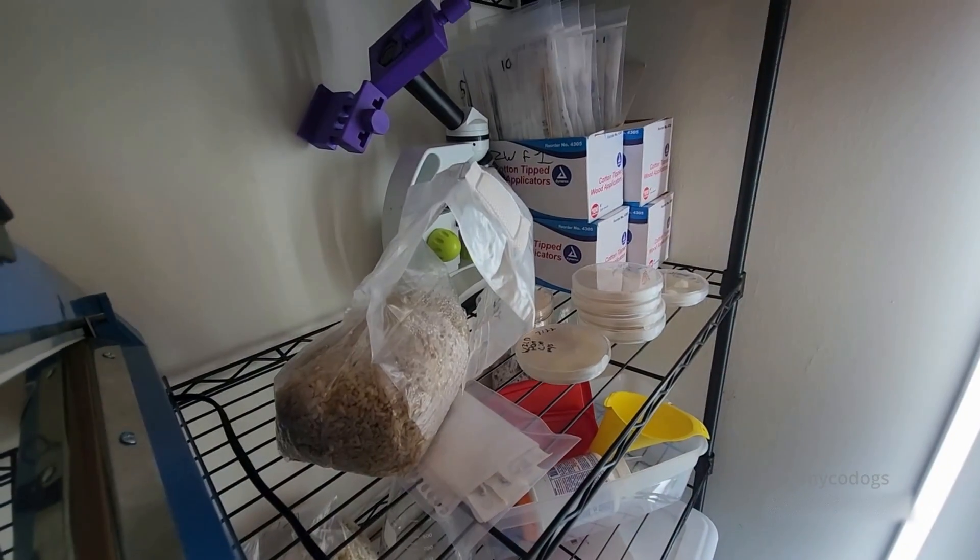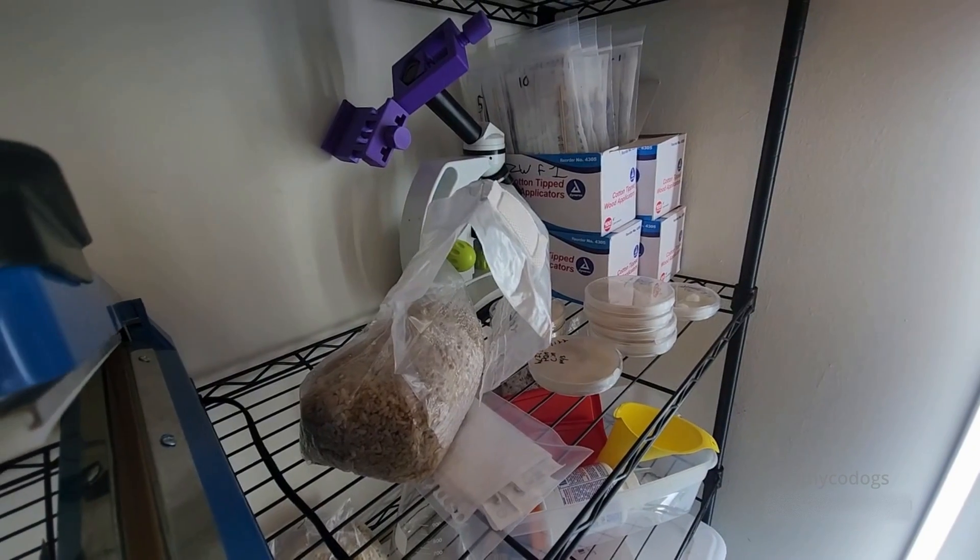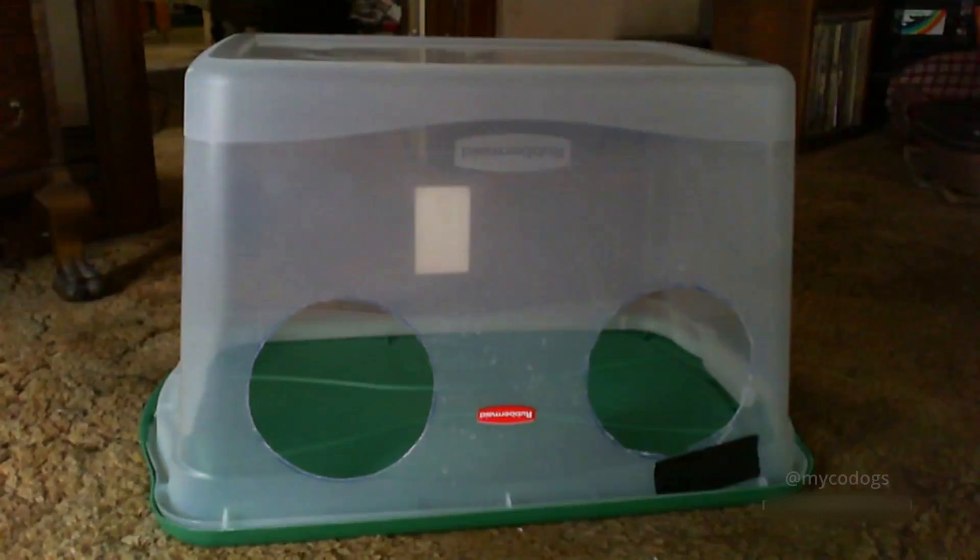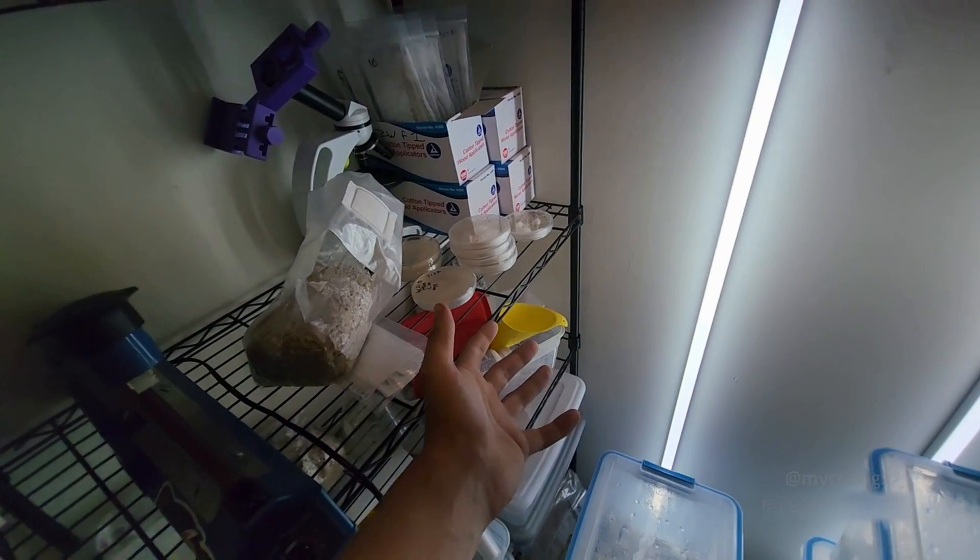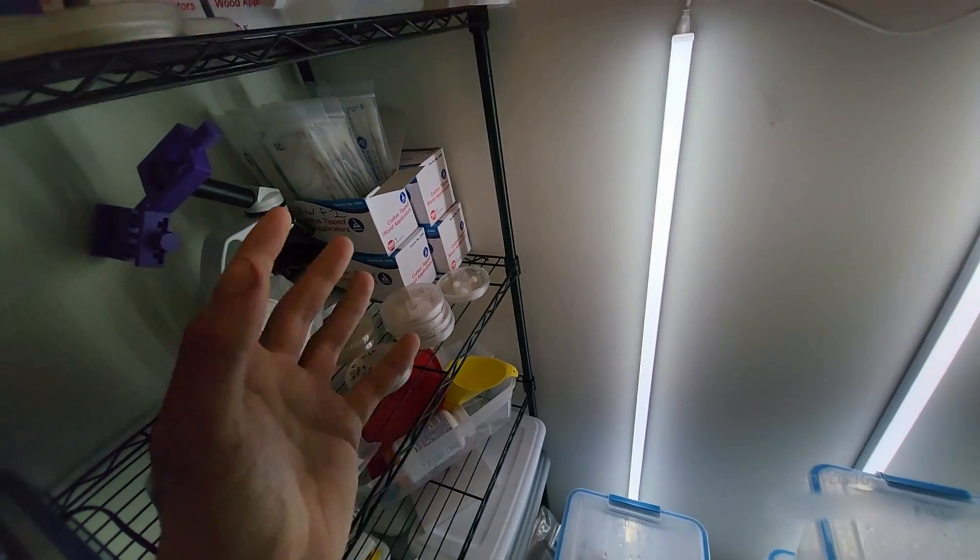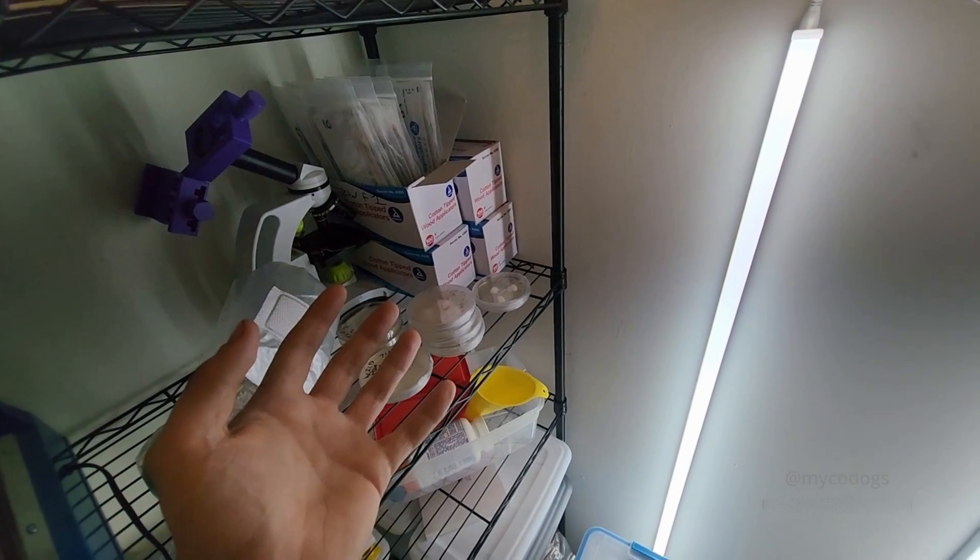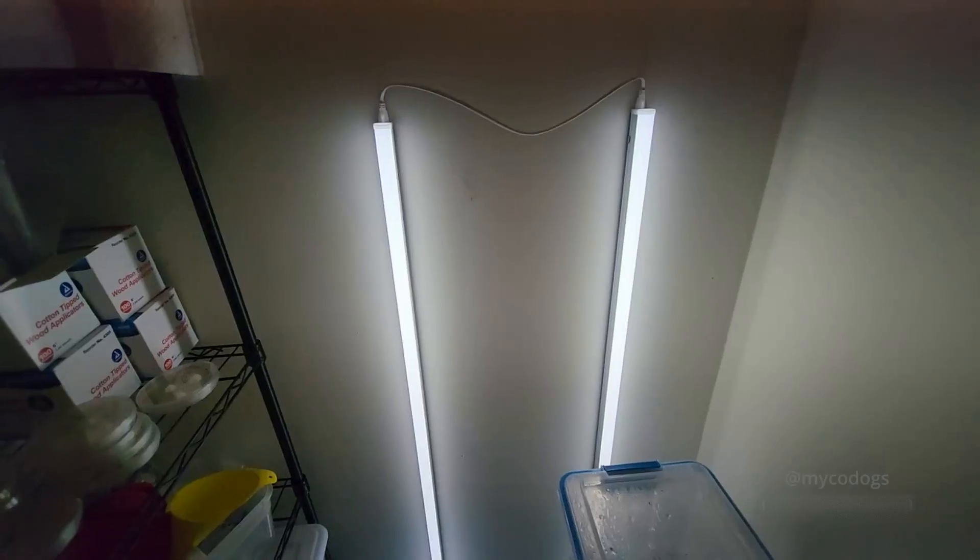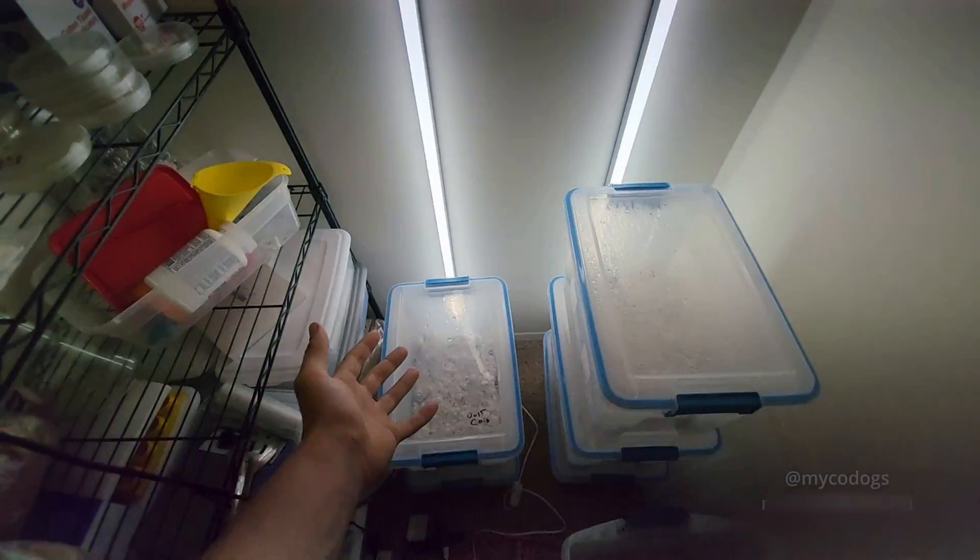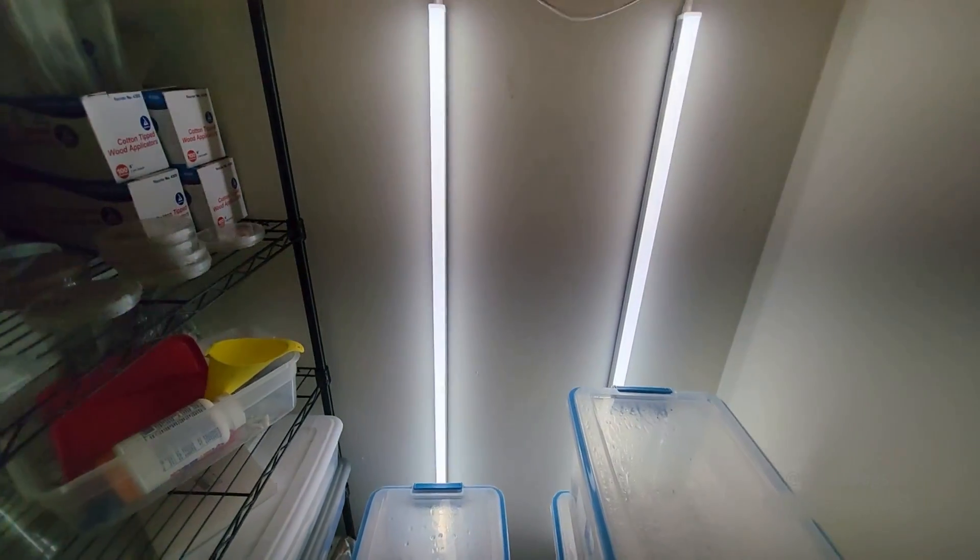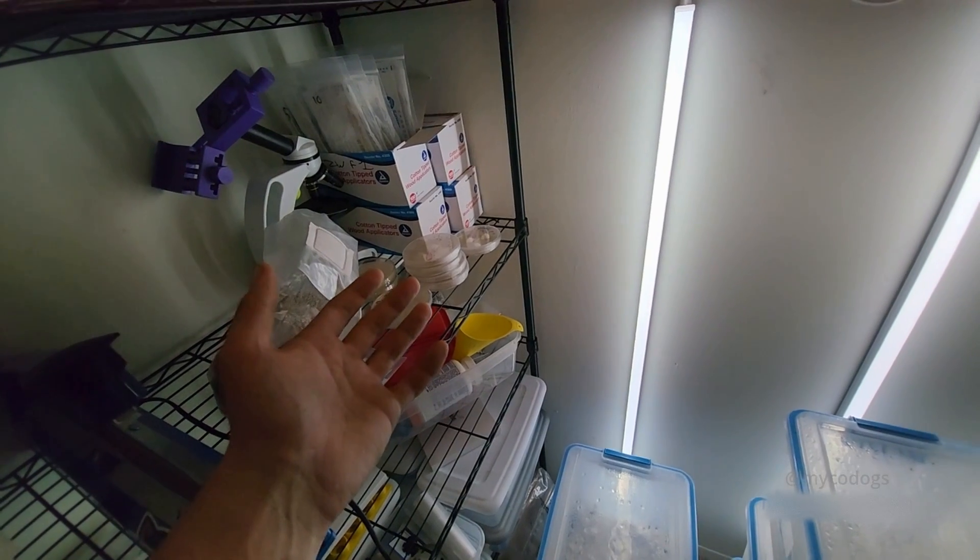They operate in two different manners to achieve sterility. The fan filter unit cleans the air, and the still air box allows the particles to settle out of the air. If you are producing a substantial volume, a flow hood or a fan filter unit will make your workflow faster and more efficient, and the costs can be justified. If you are a home grower like me, who only has a couple mono tubs growing at any one time, a still air box is more than sufficient.